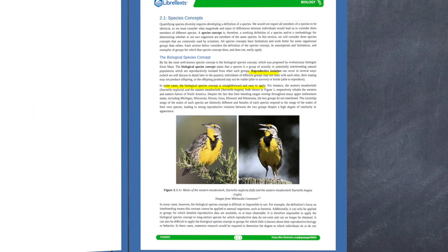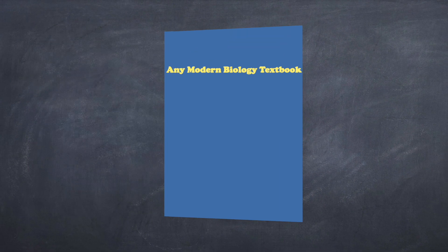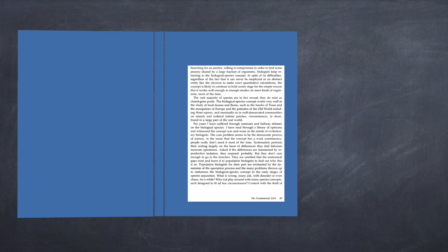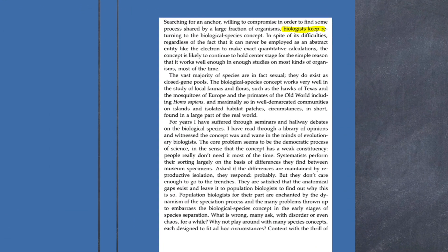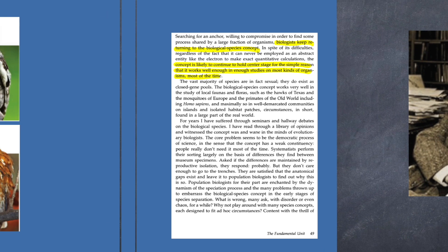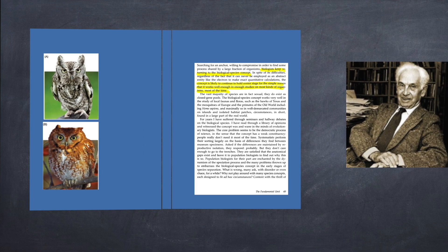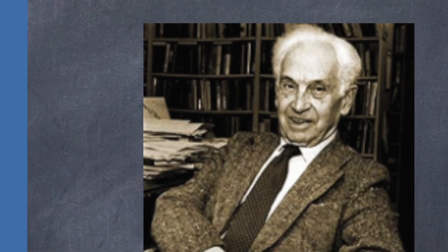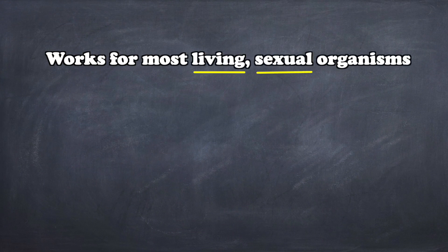By using the biological species concept, which focuses on reproductive isolation, we were able to delimitate which species is which. So this is it, right? Case closed. It's the most commonly accepted species concept, and it's usually the version included in textbooks. And it worked with the owls. Surely this is the one species concept to rule them all — right? Well, while this concept works for most living sexual organisms, it is by no means all-inclusive.